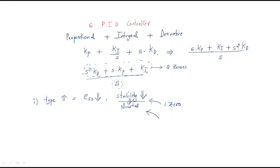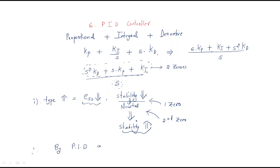The first zero added brings stability from decreased to neutral. Then the second zero is added, and the neutral becomes stability improvement. So finally, using the PID controller, the steady state error decreases and stability is improved. That is why the PID controller is very useful from a controls perspective.